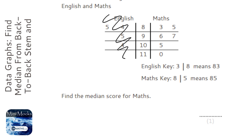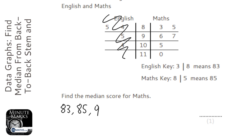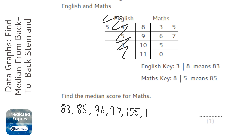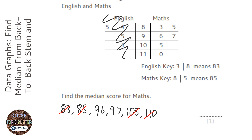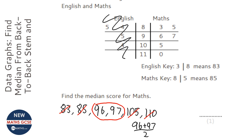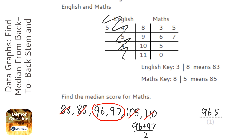There are a couple of ways to do this. You can write down the values: 83, 85, 96, 97, 105, and 110 for the maths side — the right hand side. Then do what you normally do with the median: cross one off from both sides, then cross another, and if you're left with two in the middle you add them together and divide by two. The halfway value is 96.5.